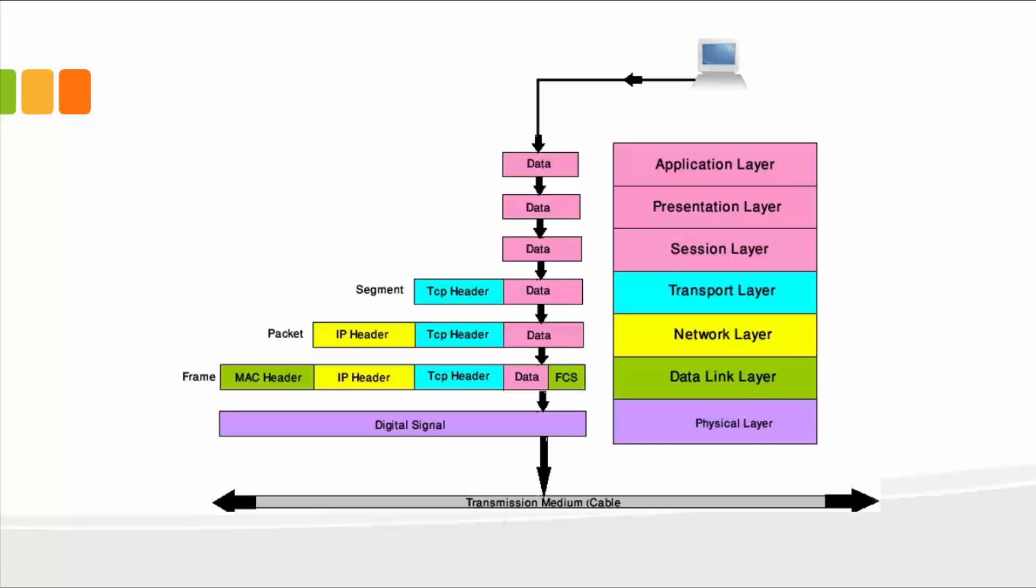So once again, it contains seven layers, starting from the bottom, which is the physical layer, the data link layer, the network layer, transport, session, presentation, and application.